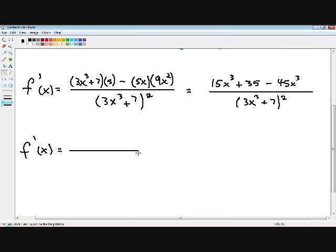Now notice in our numerator, we have two like terms, our 15x cubed and negative 45x cubed are like terms so they can be combined. So I'm going to write my 35 first, and then combine my 15x cubed and negative 45x cubed, which turns out to be negative 30x cubed. And our denominator stays the same.